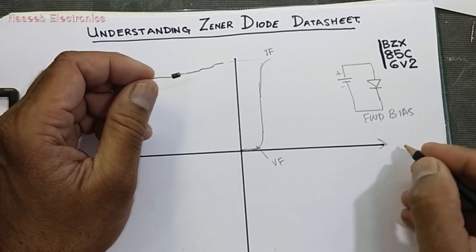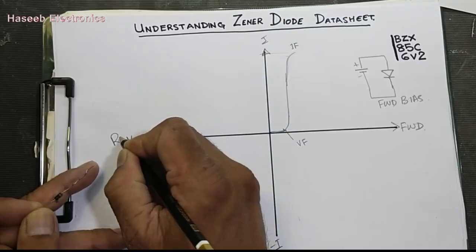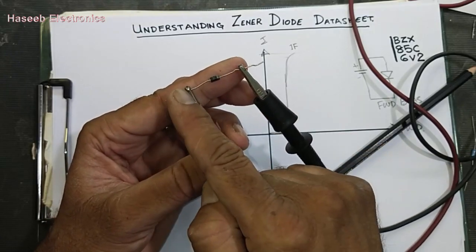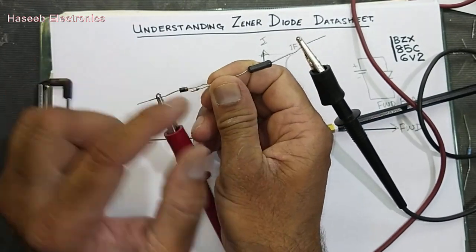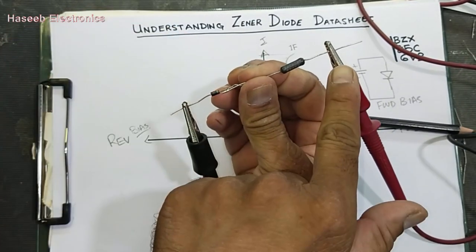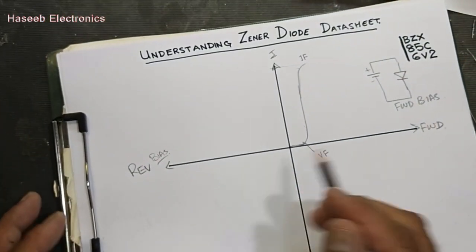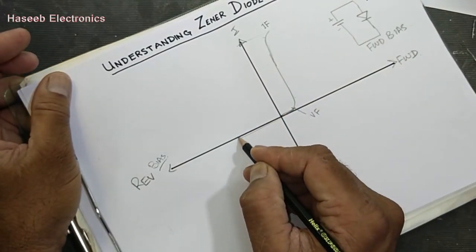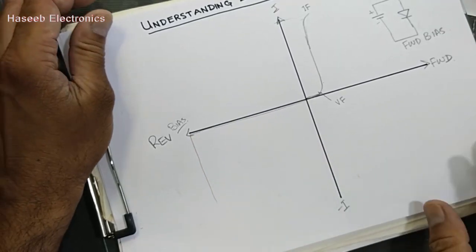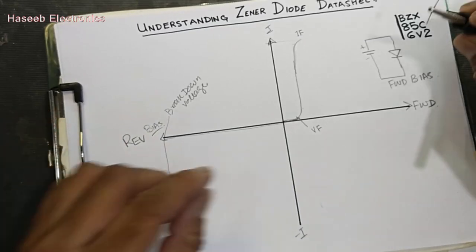As we increase the voltage in forward condition, current increases — that is the forward current region. In the reverse condition, if we connect negative supply to the anode and positive to the cathode side with a load, it will not allow current to flow. At a specific reverse voltage, the diode will break down — that is the breakdown voltage — and the resulting current is called the breakdown current. This applies to a simple rectifier diode.